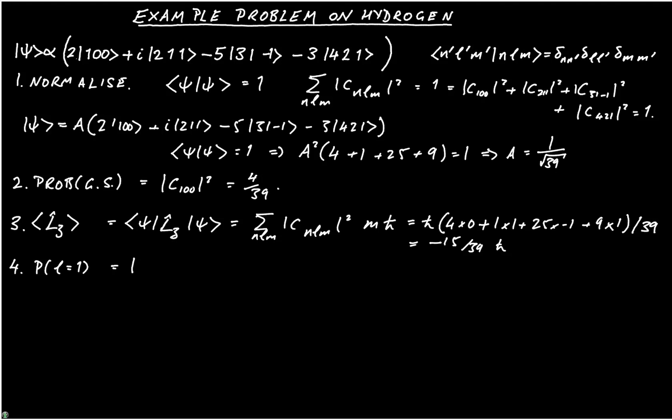And in this case, that's |C_211|² plus |C_31-1|². And that's equal to 1 over 39 plus 25 over 39. So therefore, that's 26 out of 39.